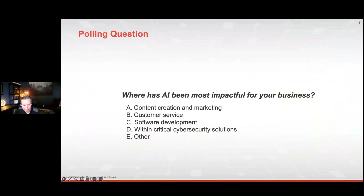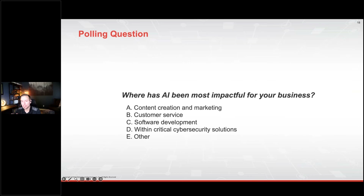I want to ask a polling question for you all. Where has AI been the most impactful for your business? I'm assuming you've at least dabbled in using artificial intelligence or ChatGPT or other tools, and I'm curious from your perspective what you've found as the most useful impact. Is it creating content and marketing? Expanding your customer service reach? Software development is a really big application for artificial intelligence these days. Within critical cybersecurity solutions — at least the ones you know of, as we'll get to, you're probably using it even if you aren't aware of it — or maybe in another area?